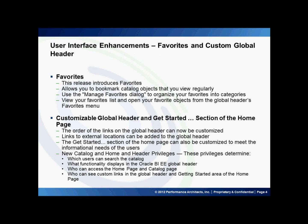Now the global header and the Get Started menu are customizable. The order of links on the global header can now be customized. Links to external applications can be added to the header and also to the Get Started menu. New catalog and home and header privileges are added to determine which users can use the search, what functionality displays in the Oracle BI global header, who can access the home page and catalog page, and who can see custom links in the global header and Get Started area of the home page.